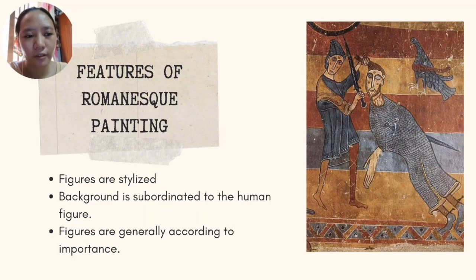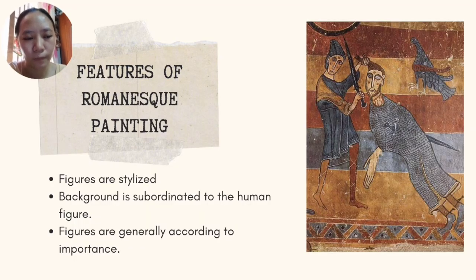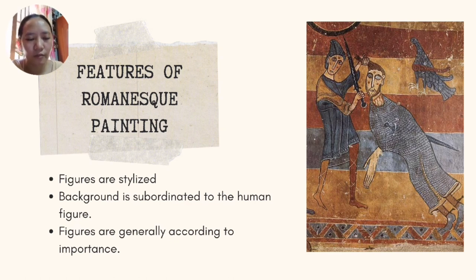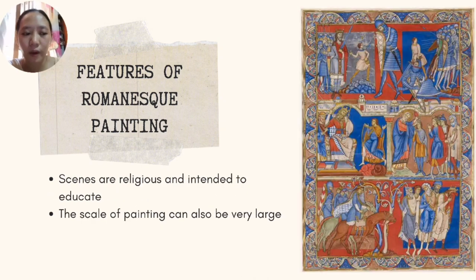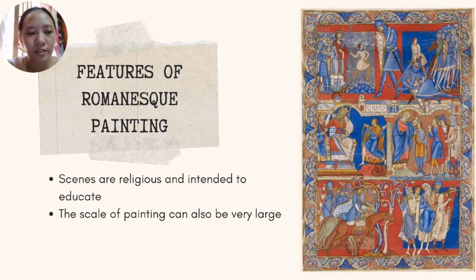Features of Romanesque painting: figures are always forward-facing, stylized, and hieratic. The technique is very simple — it has no volume or perspective. It is also rigid and schematic and did not have background landscapes. Romanesque painting scenes are religious and intended to educate, serving as a visual Bible for people who couldn't read. Biblical scenes are what is mostly painted in this period.